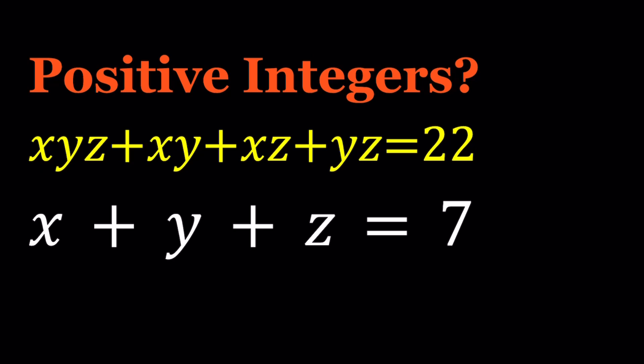Great. We could definitely just check all x, y, z that satisfy the second equation. So 3 numbers sum to 7. There aren't that many, right? For example, we could use x = 2, y = 2, and z = 3.